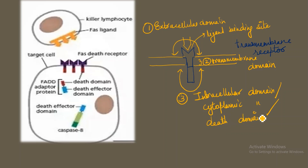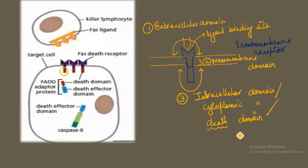The cytoplasmic domain is called the death domain because it is involved in interaction with the various proteins responsible for the death of the cell. This death domain carries charges on its outer side, and through these charges, the death domain attaches to another death domain by means of electrostatic interaction, allowing multiple proteins to interact with each other.